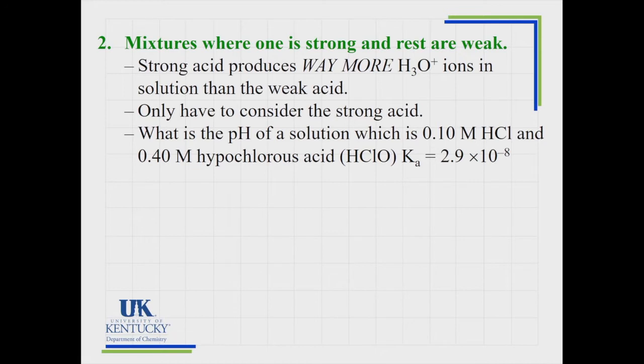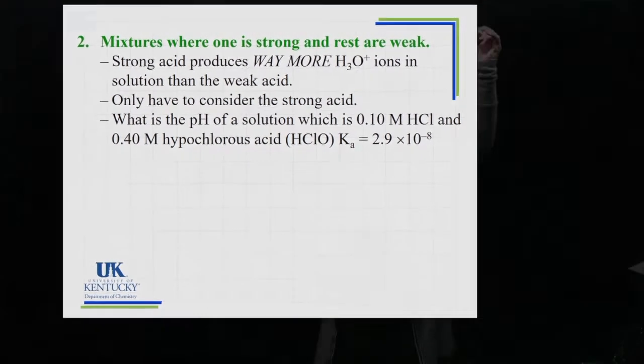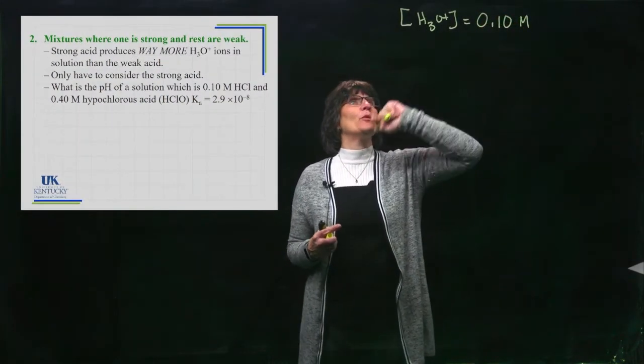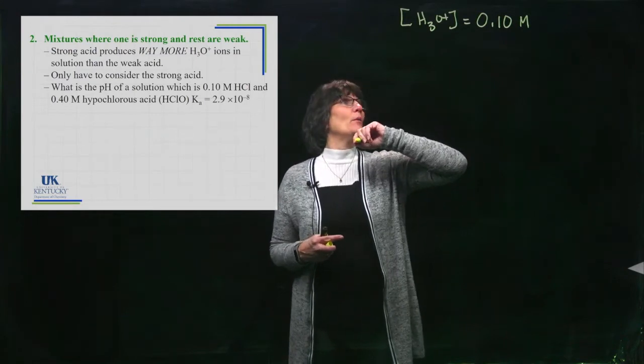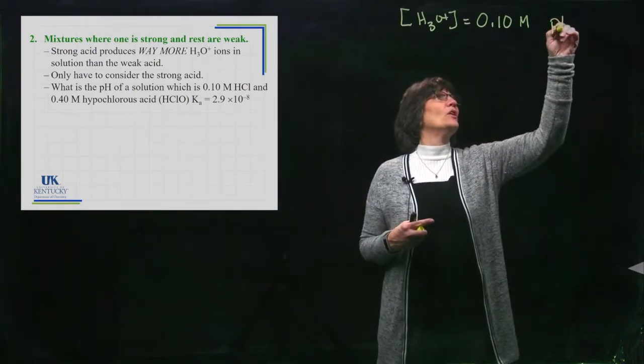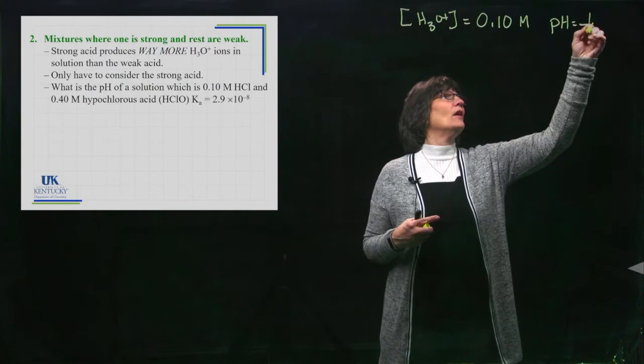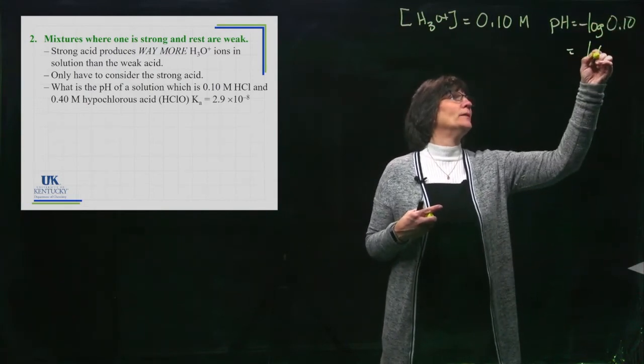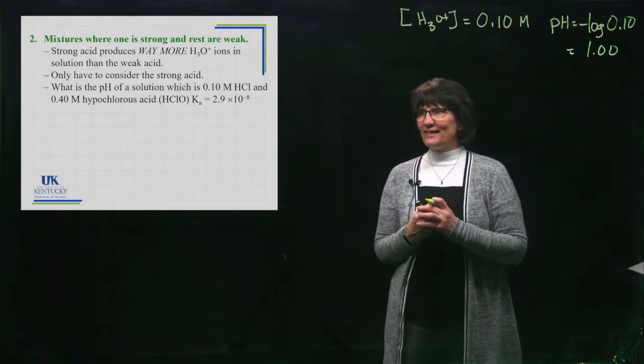I have a problem here that we're going to work. We're calculating a pH with 0.1 molar HCl and 0.4 molar hypochlorous acid, HClO, with a Ka value of 2.9 times 10 to the minus 8. It doesn't matter what that is because all I need to know is the information about the strong acid, HCl. The concentration of the HCl is the concentration of the H3O plus because it ionizes 100%. So I have 0.10 molar as the H3O plus concentration. If I want to know the pH, we just have to take the negative log of that number, and that's 1. So done.